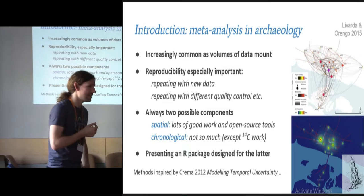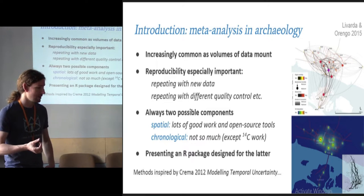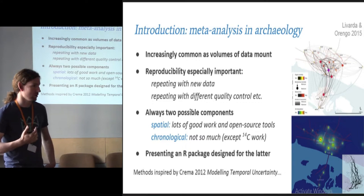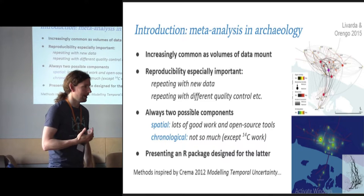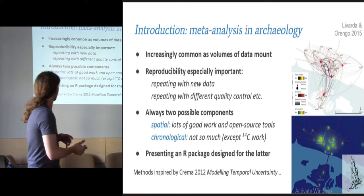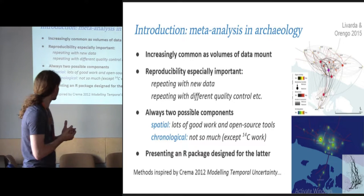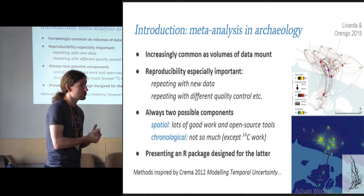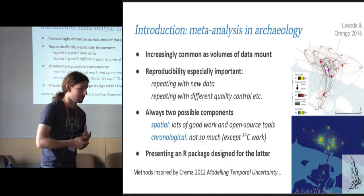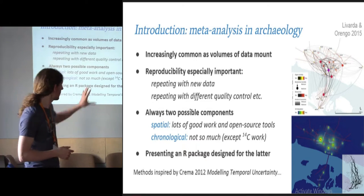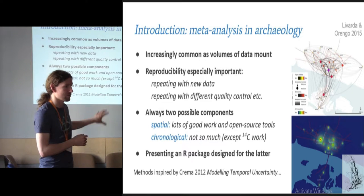My second point about meta-analysis is that there are always two possible components, spatial and chronological. If the spatial and chronological is the same, then you're looking at the same thing. Most of the work that's really been done has been focusing on tools for spatial meta-analysis. There's vast amounts of GIS work, producing open source tools for the kind of thing that's on the right here, an archaeobotanical study in London.